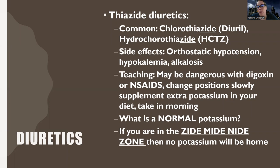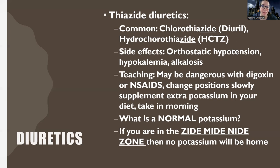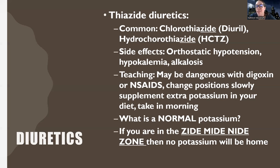Thiazide diuretics can be dangerous with digoxin — low potassium can make digoxin more effective or raise digoxin levels, potentially leading to digoxin toxicity. So keep a close eye on potassium in patients on both thiazide or loop diuretics and digoxin. NSAIDs can also be dangerous with diuretics. Patients on thiazide diuretics need to supplement potassium in their food because they're losing more of it.